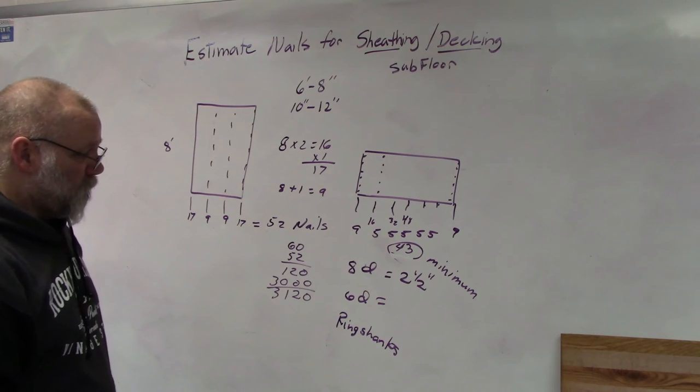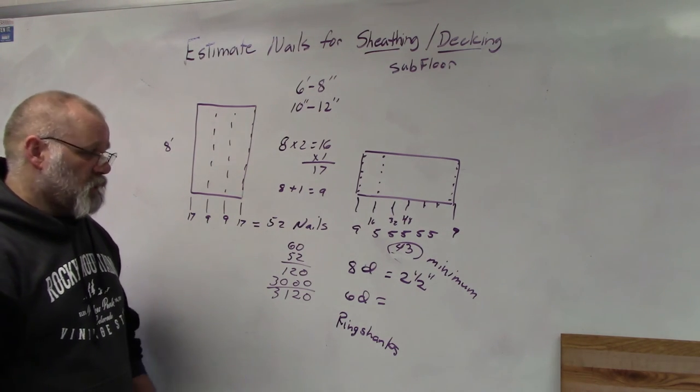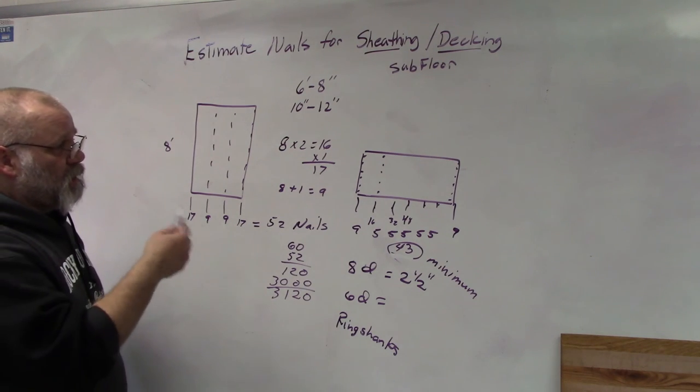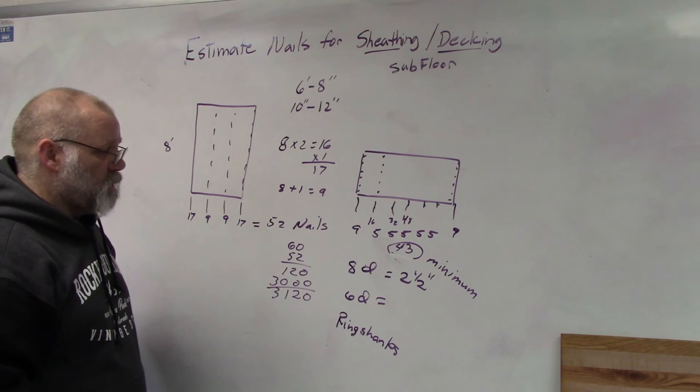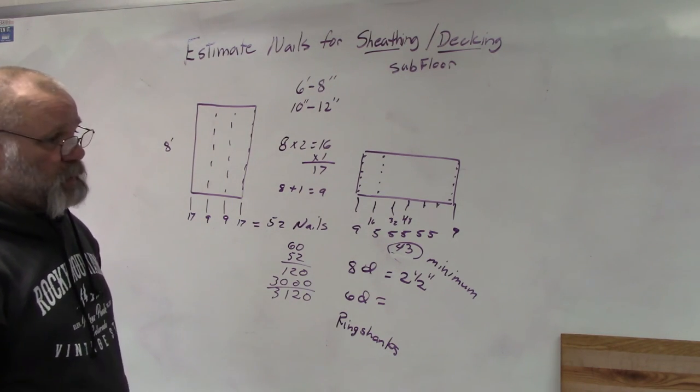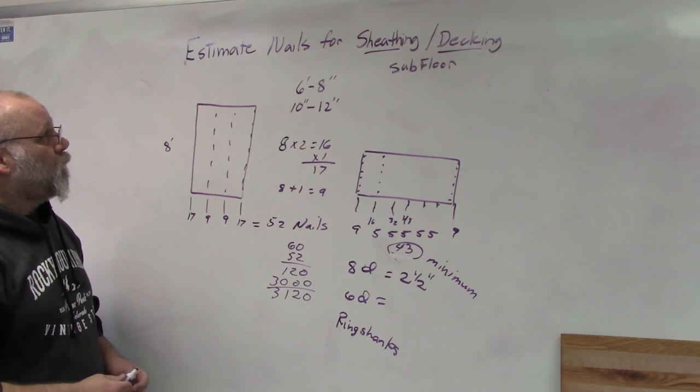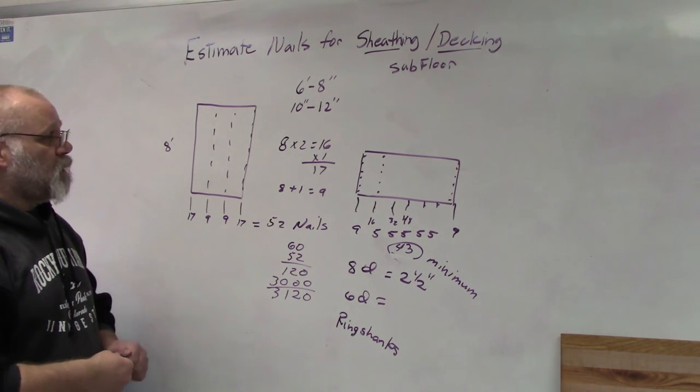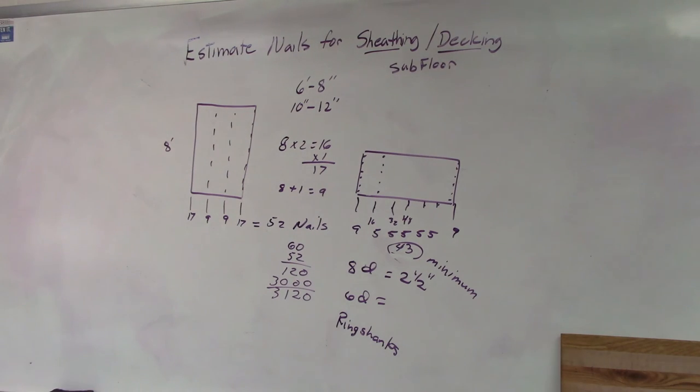You can use the ring shanks or smooth shanks. Since this is all going to be covered up, with steel nails you don't have to use galvanized ones or zinc coated ones—they're a little bit more expensive, so go with the cheaper ones. That would be estimating nails for sheeting, decking, and subfloors.